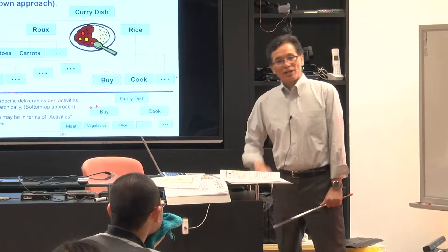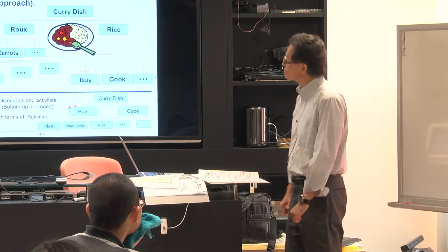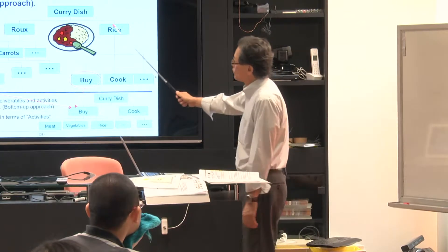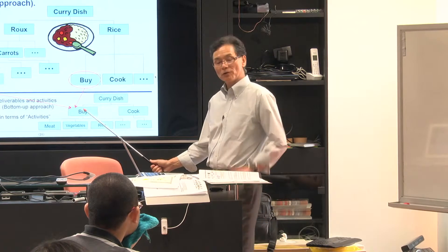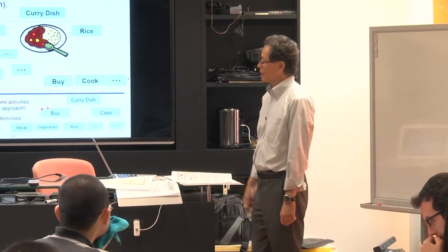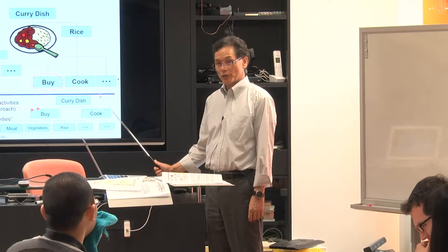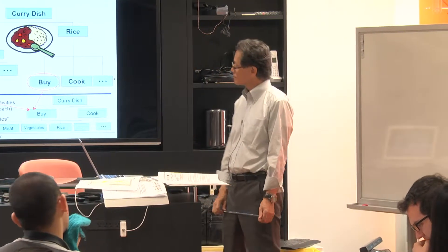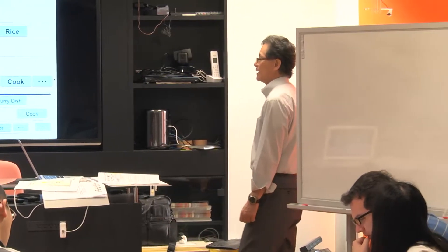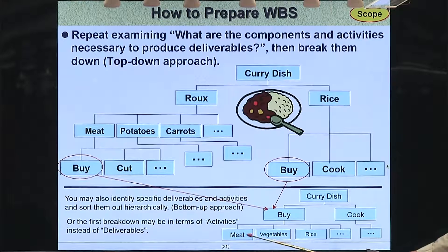The other way around: you focus on component first. But you can also focus on activity first — buy and cook. And under buying, you have some materials or foods.